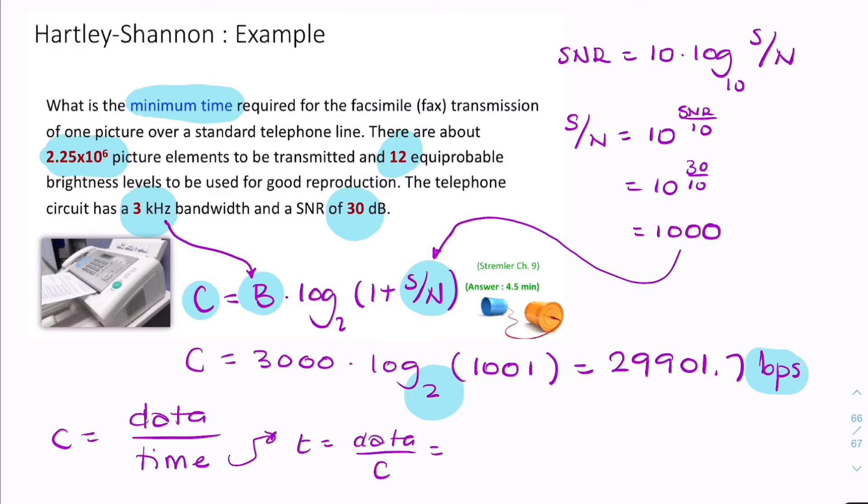The amount of data is the number of pixels, the number of dots, times the number of bits per pixel. And we're given the number of pixels, the number of dots. And N here, it's not 12.